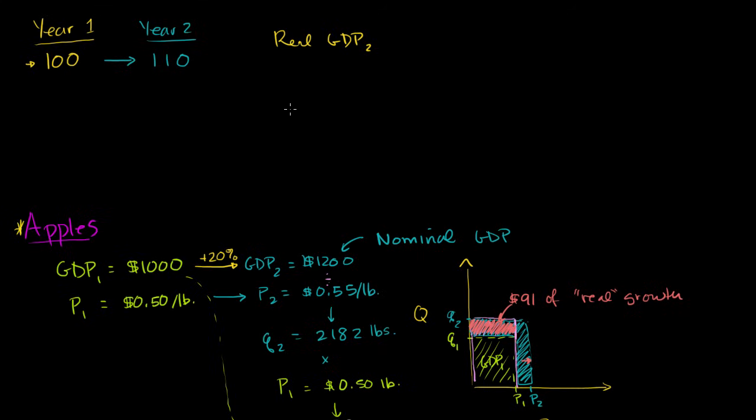So one way to think about it is really just a ratio. So nominal GDP in year two, measured in year two dollars, divided by the real GDP in year two, measured in year one dollars. Well, that's going to be the same thing as the ratio of the prices between year two and year one. This is going to be the ratio of 110 to 100.